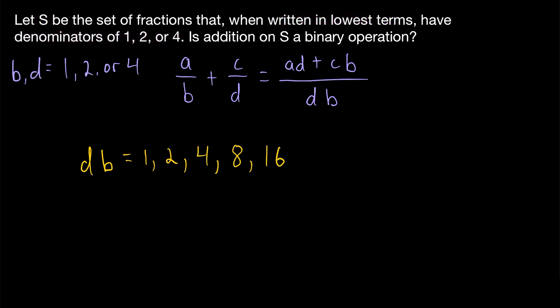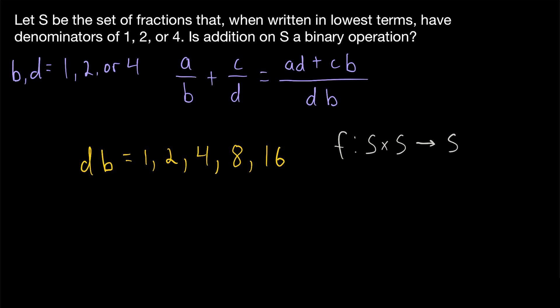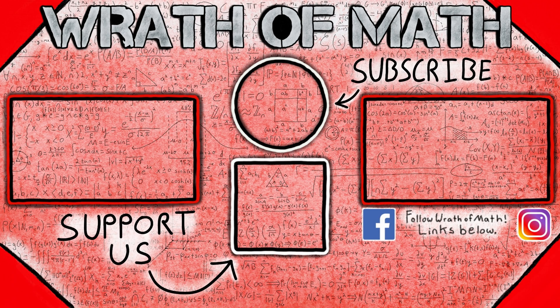Those were some examples and non-examples of binary operations — I hope they helped you really understand the definition. Remember, a binary operation has to be a function and it has to be closed, meaning it is a function from the Cartesian product of a set with itself back to that same set. It takes two elements both from the same set and assigns them to exactly one element also in that set. I hope this video helped — let me know in the comments if you have any questions, need anything clarified, or have any other video requests. Thank you for watching, and be sure to subscribe.